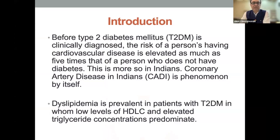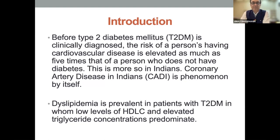Before type 2 diabetes mellitus is clinically diagnosed, the risk of a person having cardiovascular disease is elevated as much as five times that of a person who doesn't have diabetes. Even pre-diabetes has a similar risk of getting cardiovascular disease as a diagnosed case of type 2 diabetes. So it is very important that we start picking up these patients early in the course of disease.